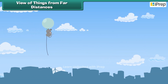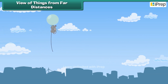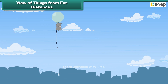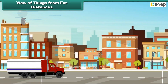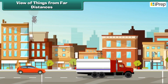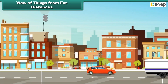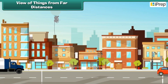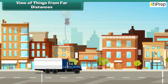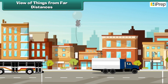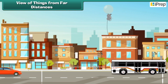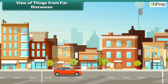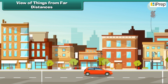Gappu now understands how big the world is. He was surprised to see many houses, streets, roads, trees, and various vehicles moving on the road.